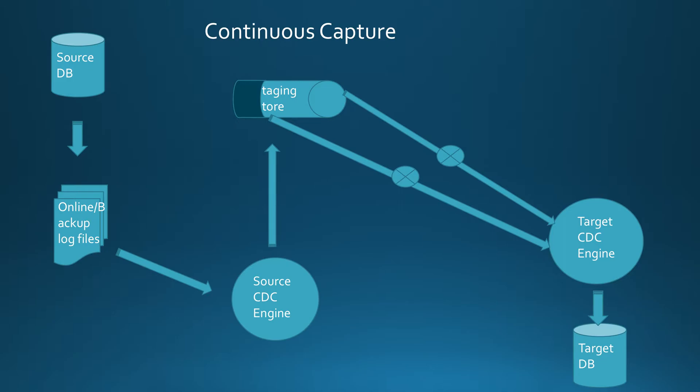After a subscription is restarted, it requests the bookmark from the target system and restarts from the position corresponding to that bookmark in the log. If this log entry is no longer available because the log files have been purged or archived, replication does not start — the log files must be restored for normal operation to continue.